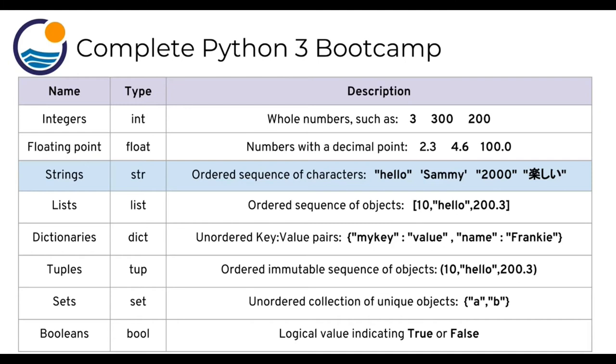Here we can see we have hello in double quotes, Sammy in single quotes. We have the digits of 2,000 inside double quotes. That makes it a string. It's no longer just an integer because it has double quotes around it. And you can also see we have some Japanese characters inside double quotes.